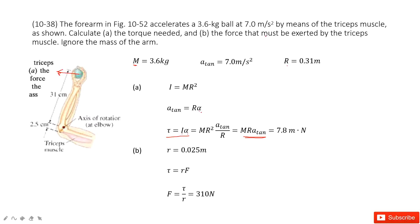The next part asks for the force that must be exerted by the muscle. You can see this is the fixed point, and the torque is balanced — it is applied by the muscle. The muscle is here, the fixed point is there, and the distance is 0.025 meters. The torque equals r times force times sine of theta. Since the angle is 90 degrees, torque equals r times F, so force F equals torque divided by r. Thank you.